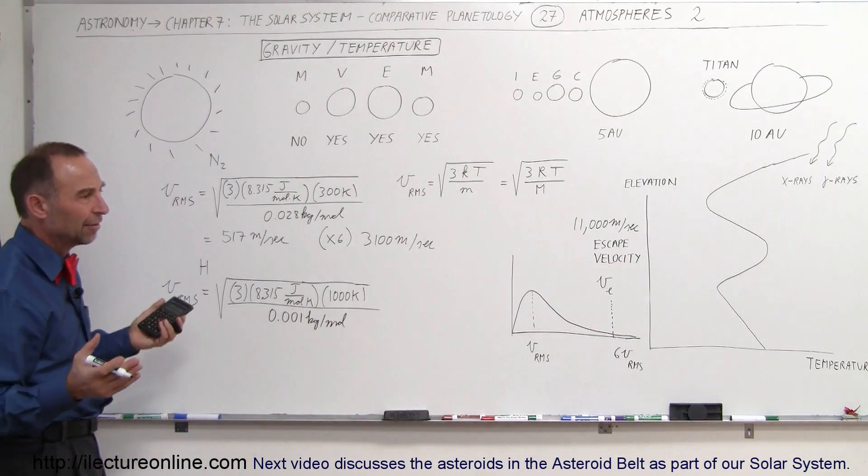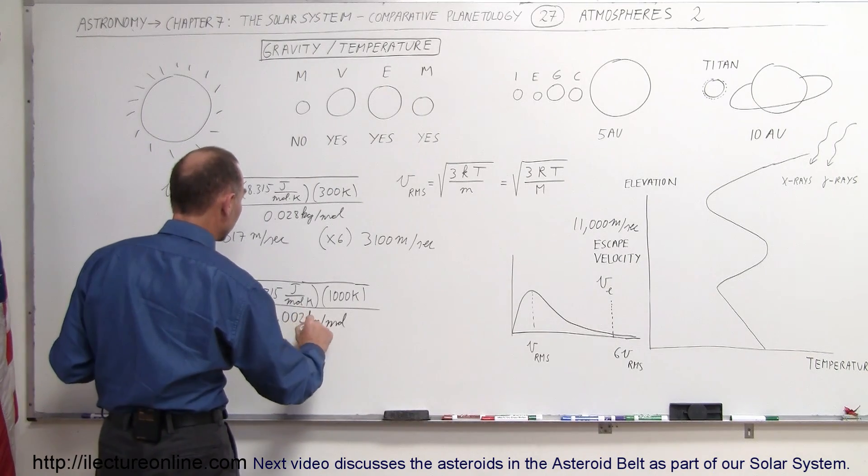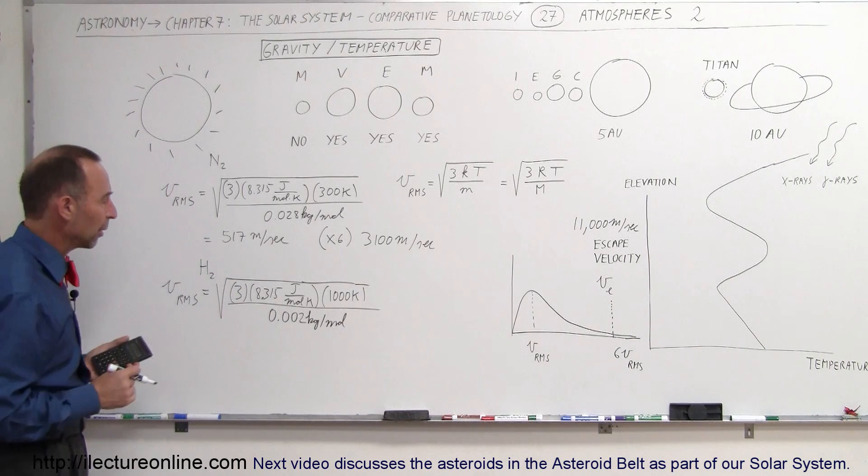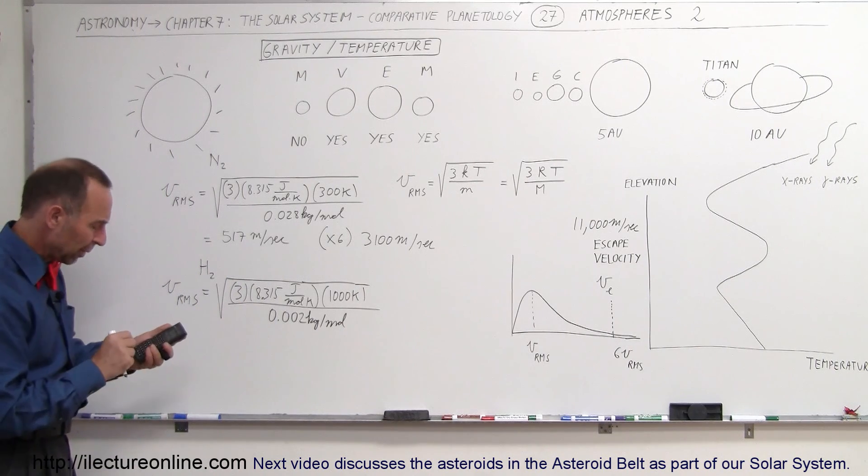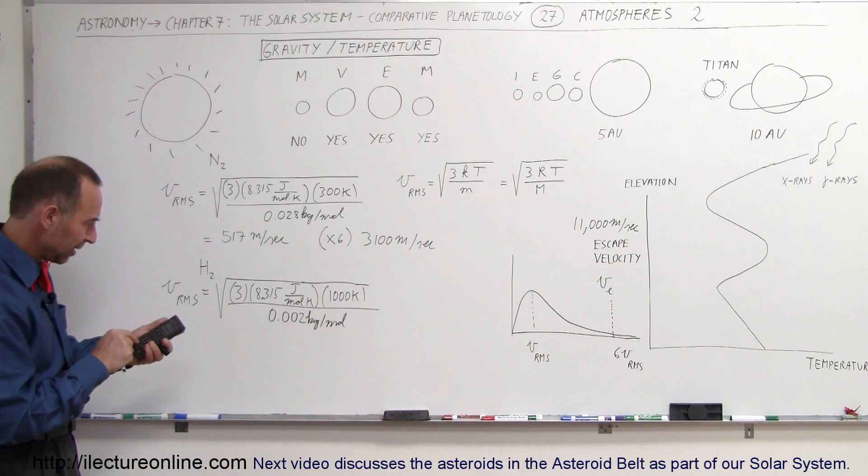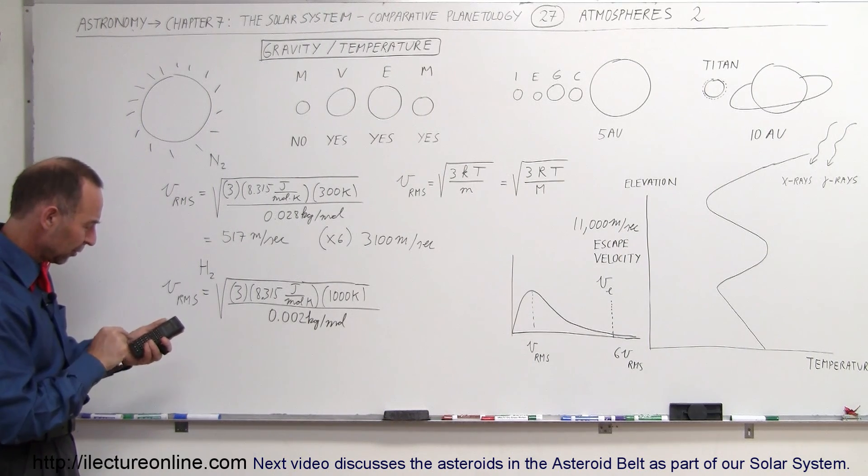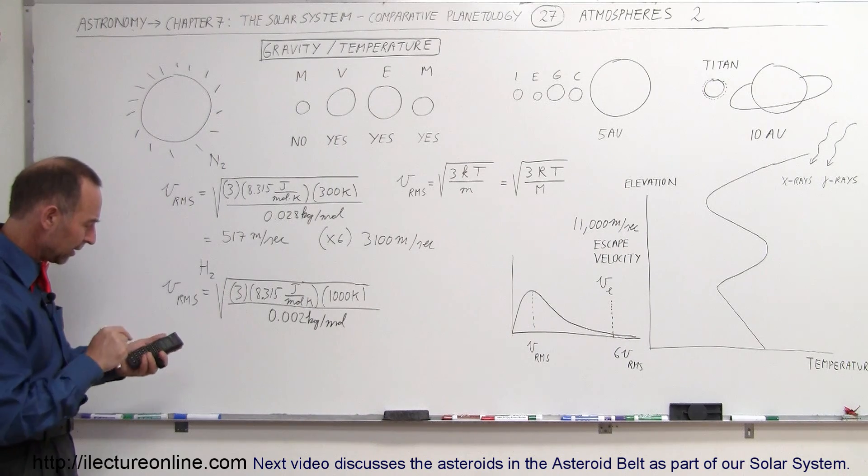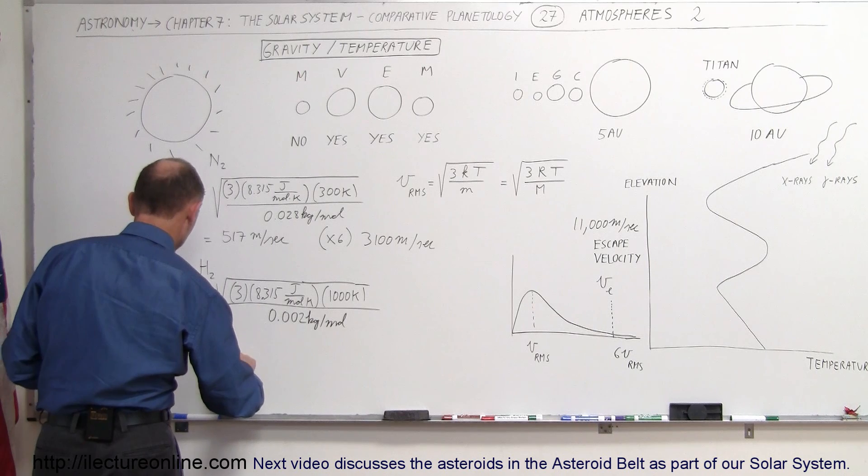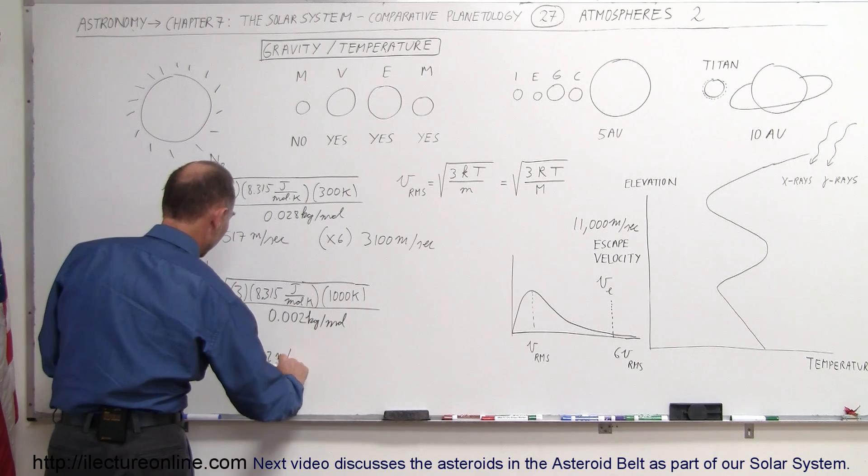We divide that by 0.001 kilogram per mole for a typical hydrogen atom. Let's say if hydrogen then recombines and turns into a hydrogen molecule, then all you would get here would be 0.002, and then we're dealing with a hydrogen molecule, depending upon what we're dealing with. So, let's see what we get there. We get 3 times 8.315 times 1,000 divided by 0.002, take the square root of that, and now we have an RMS velocity equal to 3,532 meters per second.